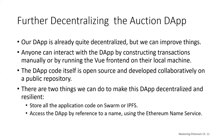There are two things we can do to make it further decentralized and resilient: we can store all the app code on Swarm or IPFS, and we can access a DAP by reference to a name using the Ethereum Name Service (ENS). We'll do subsequent lectures diving into Swarm and ENS. For now, thank you for watching this brief lecture on the Web3 auction DAP.